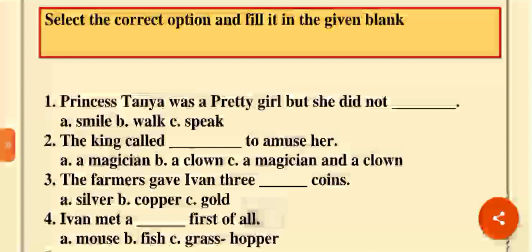First, number 1. Princess Tanya was a pretty girl, but she did not. The option A.